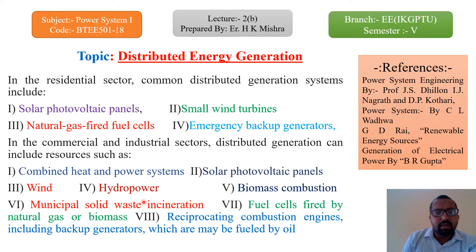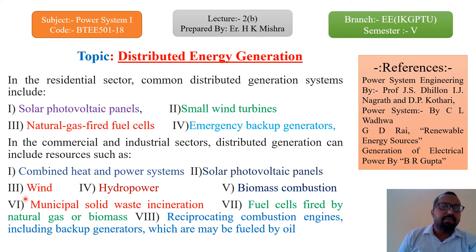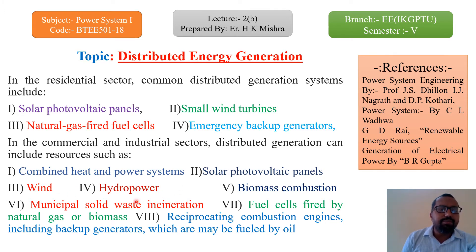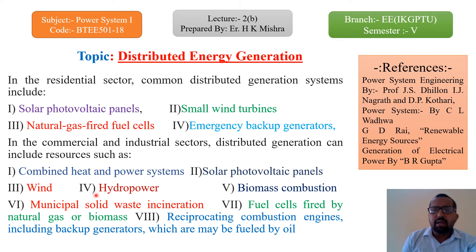Wind power plants are another example. Different wind companies like Synergy, Adani, and Surya are using wind power generation in the coastal areas of Gujarat, which is a very good example of distributed generation systems. It maintains the power quality of the Gujarat Electricity Board and the Power Grid Corporation of India Limited. In rural areas of Himachal Pradesh, Uttarakhand, and the North East, bulb turbines are used to develop micro or small hydropower plants that supply power directly to customers, not connected to any grid.